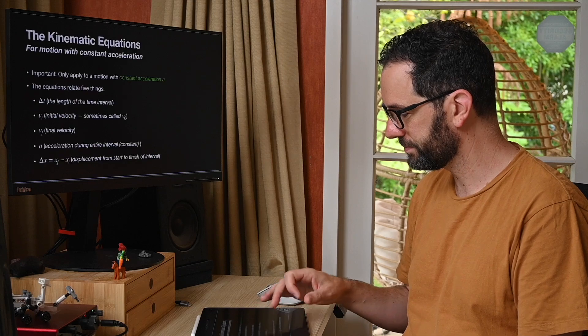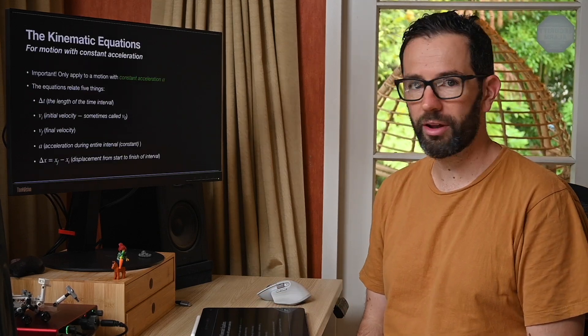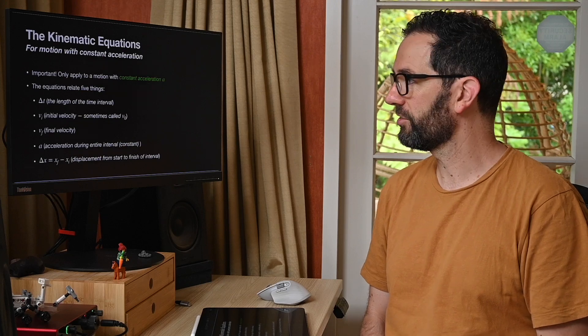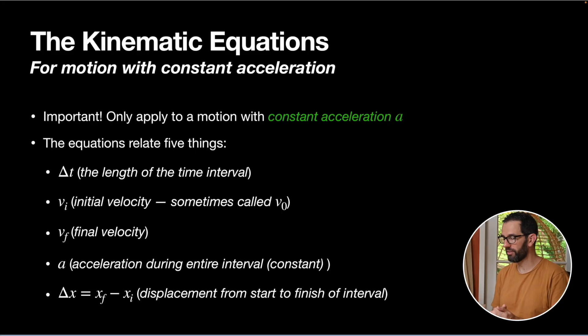And these are called the kinematic equations. So the kinematic equations, first important point, they only apply to a motion where the acceleration is constant for that entire motion. It might be zero, but it has to be the same over the whole interval of time that we're talking about.